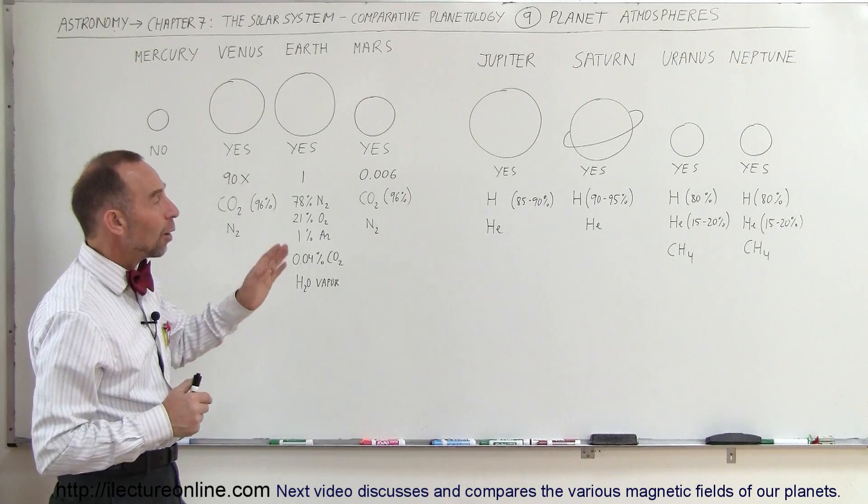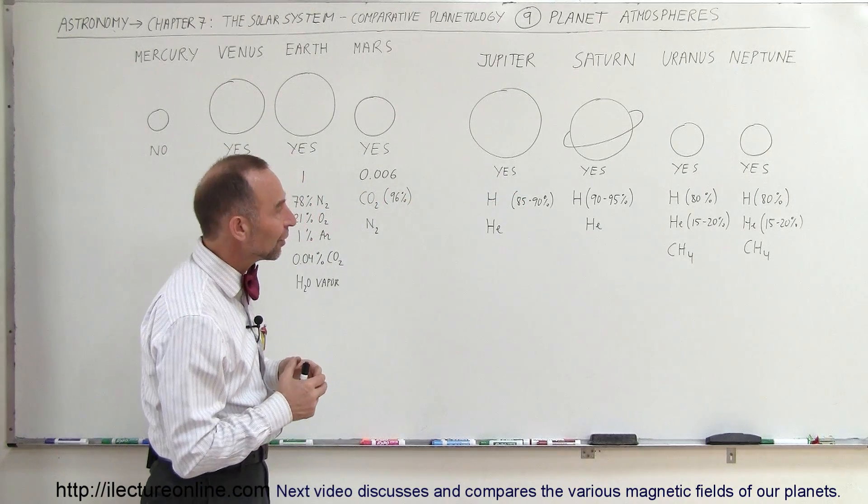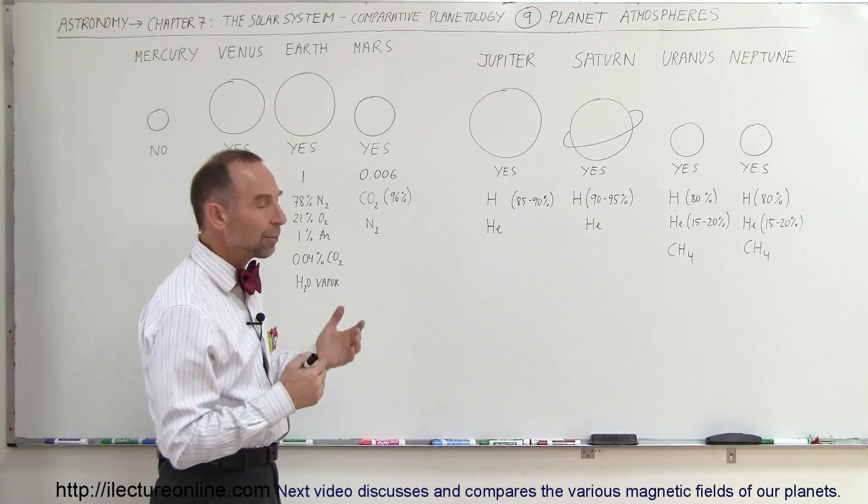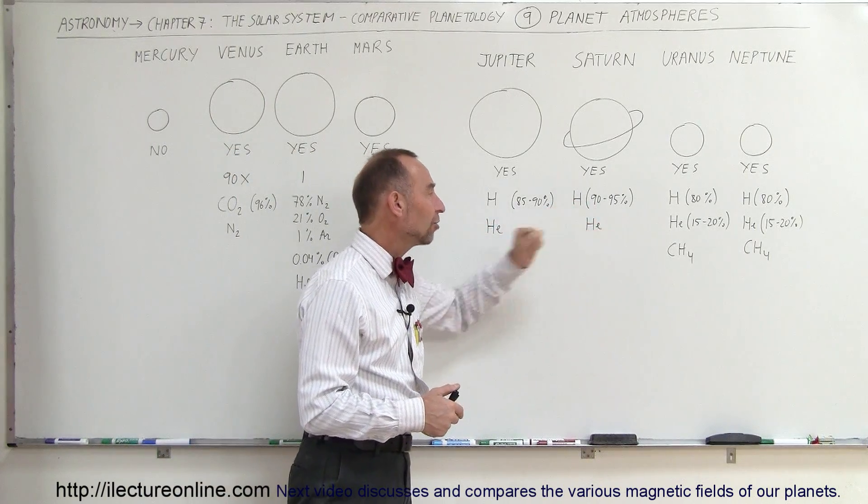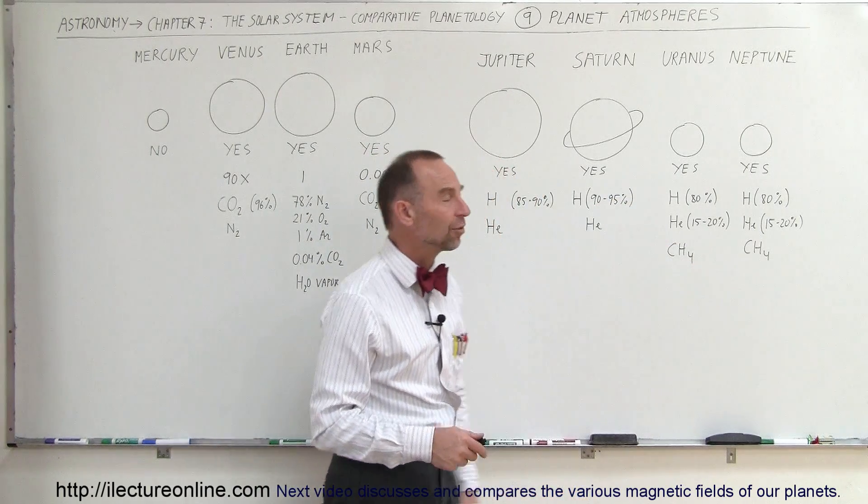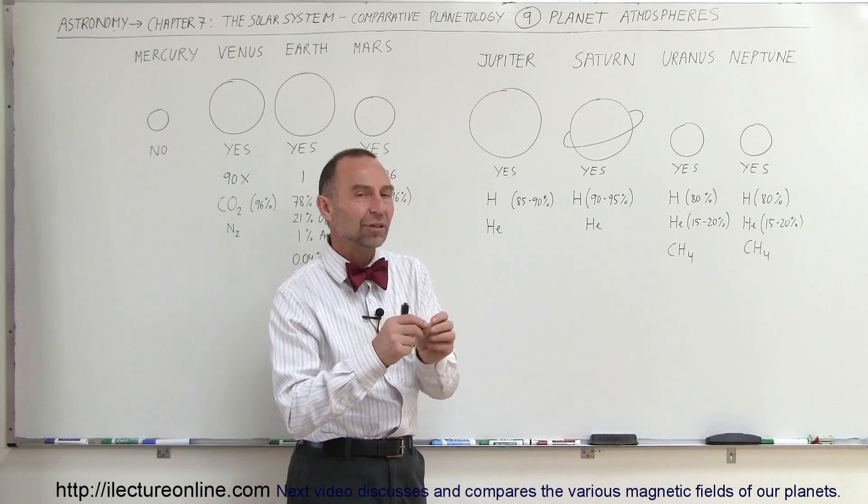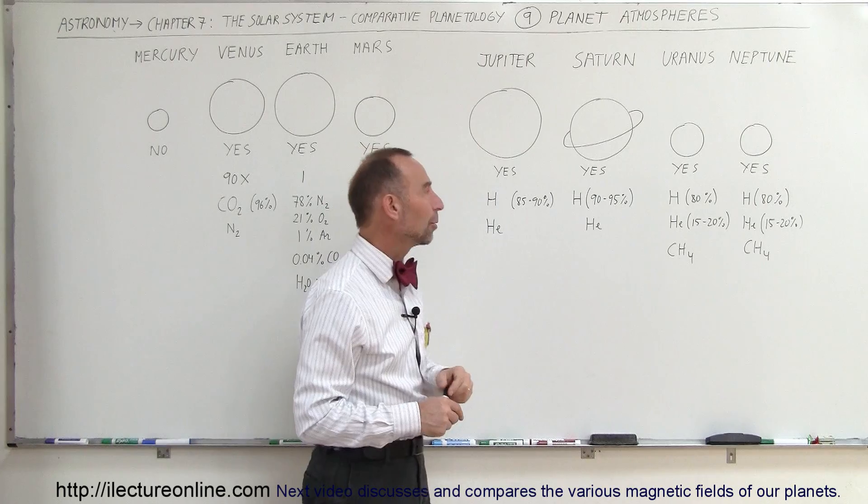Notice though that all four of the gas planets do indeed have an atmosphere, and by and large the atmosphere is fairly similar. Mostly hydrogen and some helium, but in the case of Uranus and Neptune, we also find some methane in the atmosphere. It's the methane that gives those two planets their bluish color, which is lacking in Jupiter and Saturn.